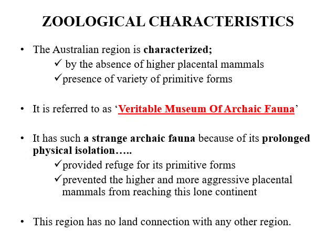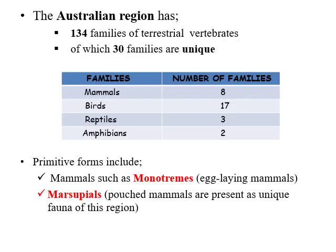This region has no land connection with any other region. In the Australian region there are 134 families of terrestrial vertebrates, of which 30 families are unique to this region: 8 families of mammals, 17 bird families, 3 reptilian families, and 2 amphibian families. The primitive forms include mammals such as monotremes — the egg-laying mammals — as well as marsupials, the pouch mammals, which are present as unique fauna of this region.